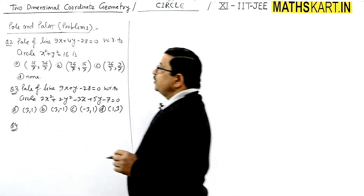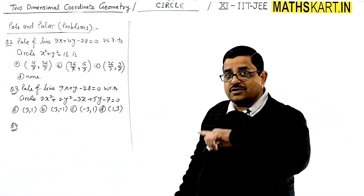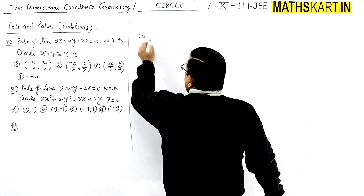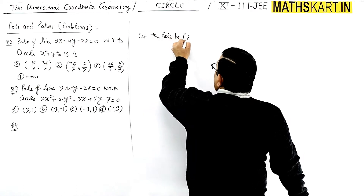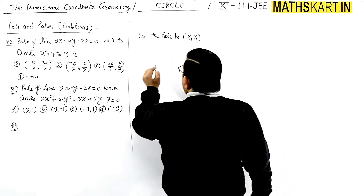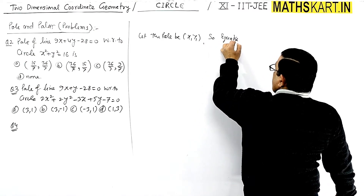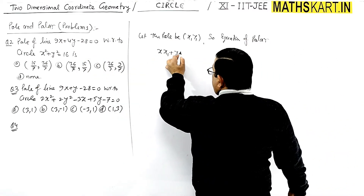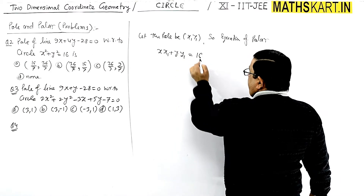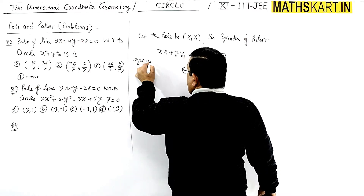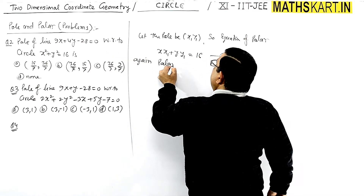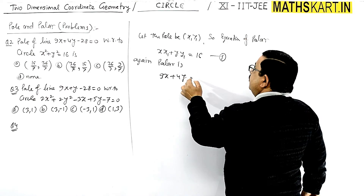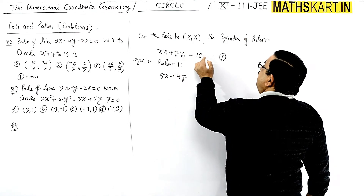This is the polar, and with respect to this polar line we have to find out the pole. Let the pole be (x₁, y₁). The equation of polar for this circle will be xx₁ + yy₁ = 16. The given polar is 9x + 4y − 28 = 0.